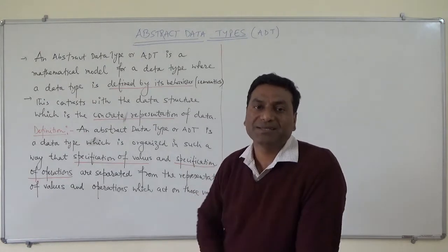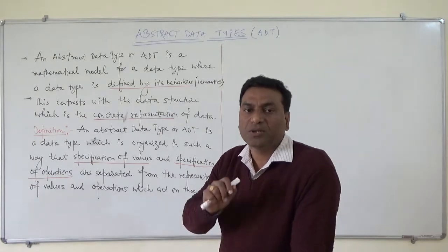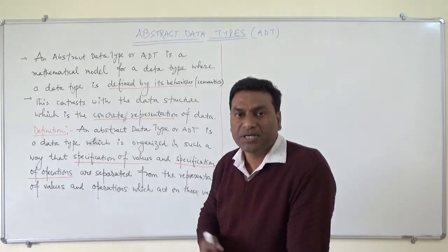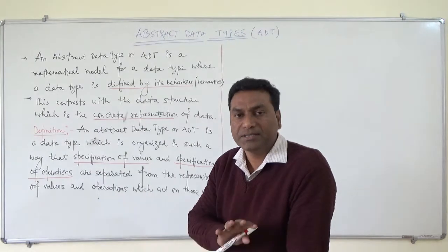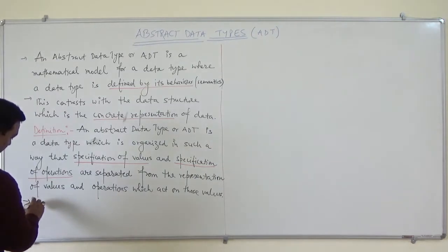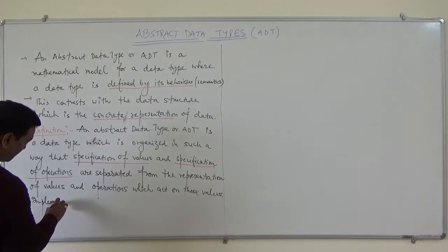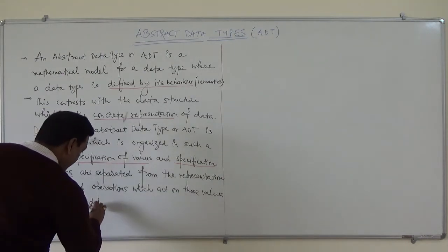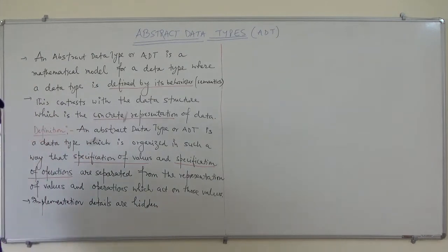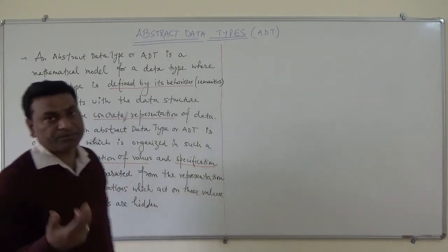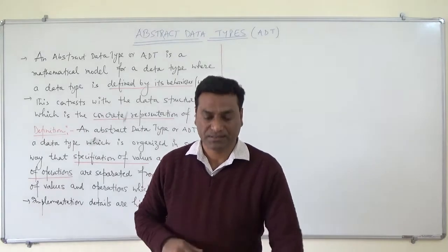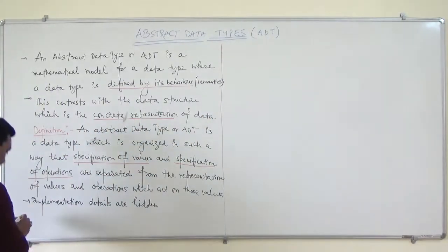In other words, the implementation details are basically hidden. We normally focus on the 'what' — what is that data — but how it will be implemented is hidden. This is a very popular feature of object-oriented programming languages, that is, abstraction, where the implementation details are hidden.